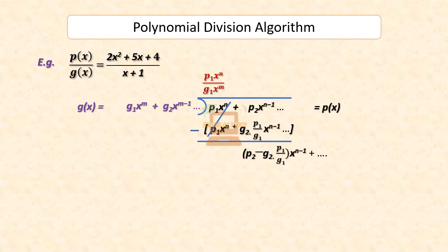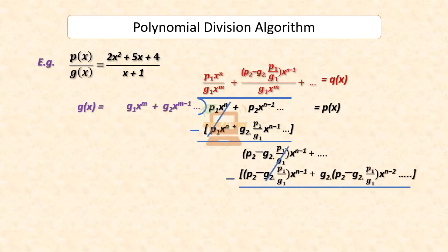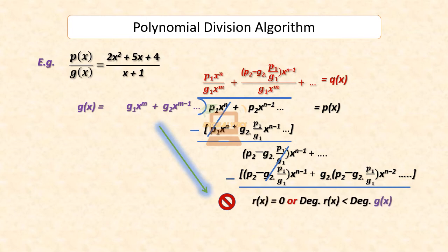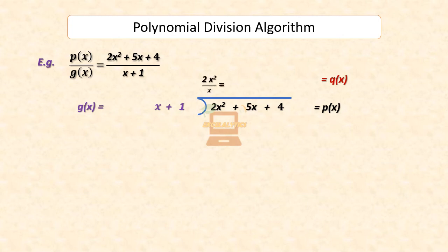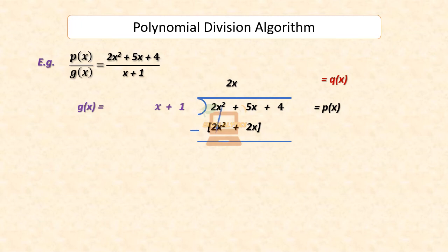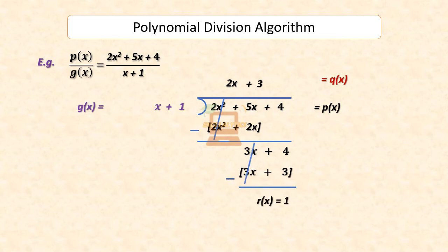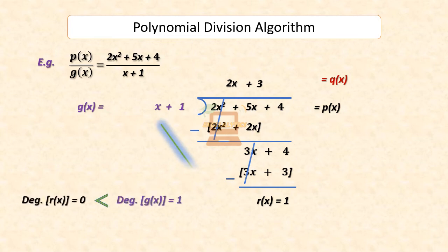With the result of the subtraction, we again proceed with finding a multiplier that would cancel out the result of the previous step. It is important to note that, just as in normal long division of numbers where we stop dividing when the remainder reaches 0 or is less than the divisor, in a similar fashion we stop the division process of polynomials when the remainder reaches 0 or has a degree less than the degree of the divisor polynomial. In this example, we first multiply the divisor x plus 1 with 2x to obtain 2x squared plus 2x, and subtract from the dividend 2x squared plus 5x plus 4 to get 3x plus 4. Again, multiplying x plus 1 with plus 3, we get 3x plus 3 for subtraction from the previous step result. This leaves a remainder of 1. Since the remainder has a degree less than that of the divisor, we end our division process. The final quotient is 2x plus 3, and remainder is 1.